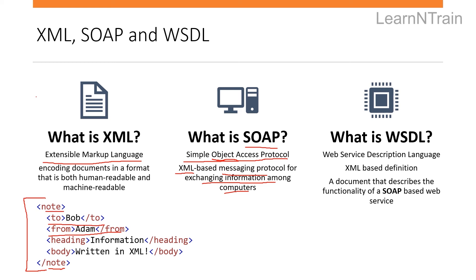So what is WSDL? SOAP implementation is always different for different scenarios, so we need a document that describes the functionality of the SOAP-based service. This document is known as WSDL — Web Services Description Language. It is also an XML-based document.